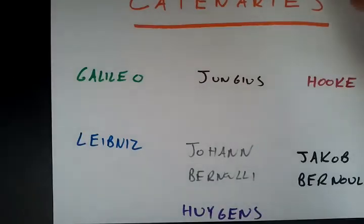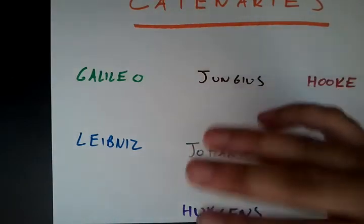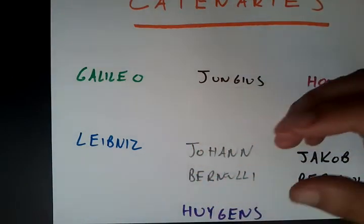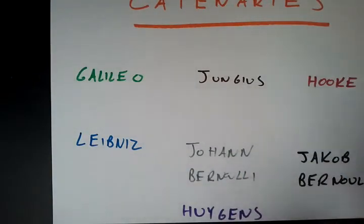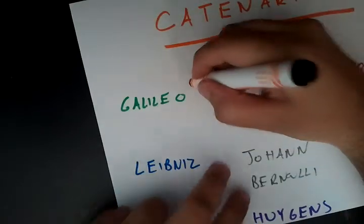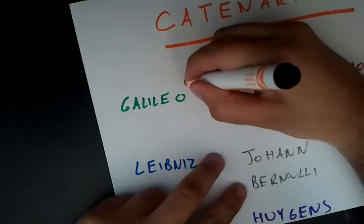So I thought we'd start with a small history thing, because it's actually interesting how so many prominent scientists all contributed to the catenaries and the equations about it. So it all starts with Galileo, and Galileo, in all of his intelligence, still thought that the form that you get from holding a string between two fixed points was a parabola. Until the day he died, thought it was a parabola.